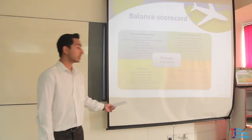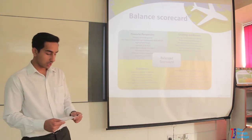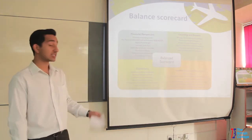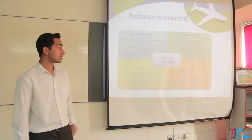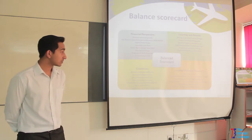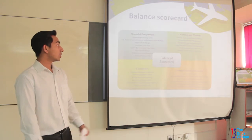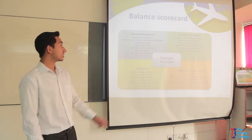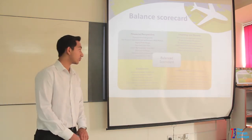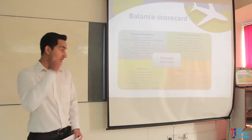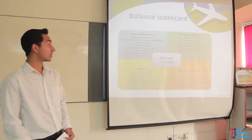The balanced scorecard is a strategic planning system used to align business activities. The perspectives we kept in our balanced scorecard were financial perspectives, internal business processes, customers, and learning and growth. Throughout the simulation, we tried to keep our financials at a good position. Even though we were at a bad place during the first quarters, we recovered very well.